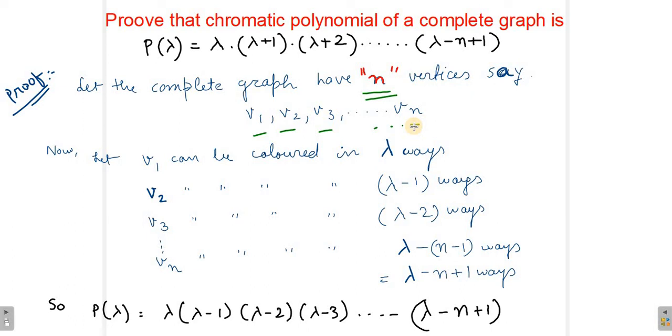Now let v1 be colored in lambda ways. So if we have, for example, three colors - red, green, and blue - we have three ways in which we can color v1.